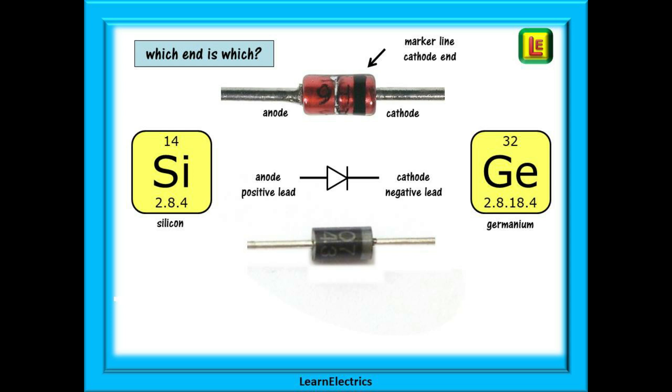Some diodes are made of germanium but mostly silicon is used. The diode has an anode end and a cathode end and the marker band on a diode indicates the cathode end.